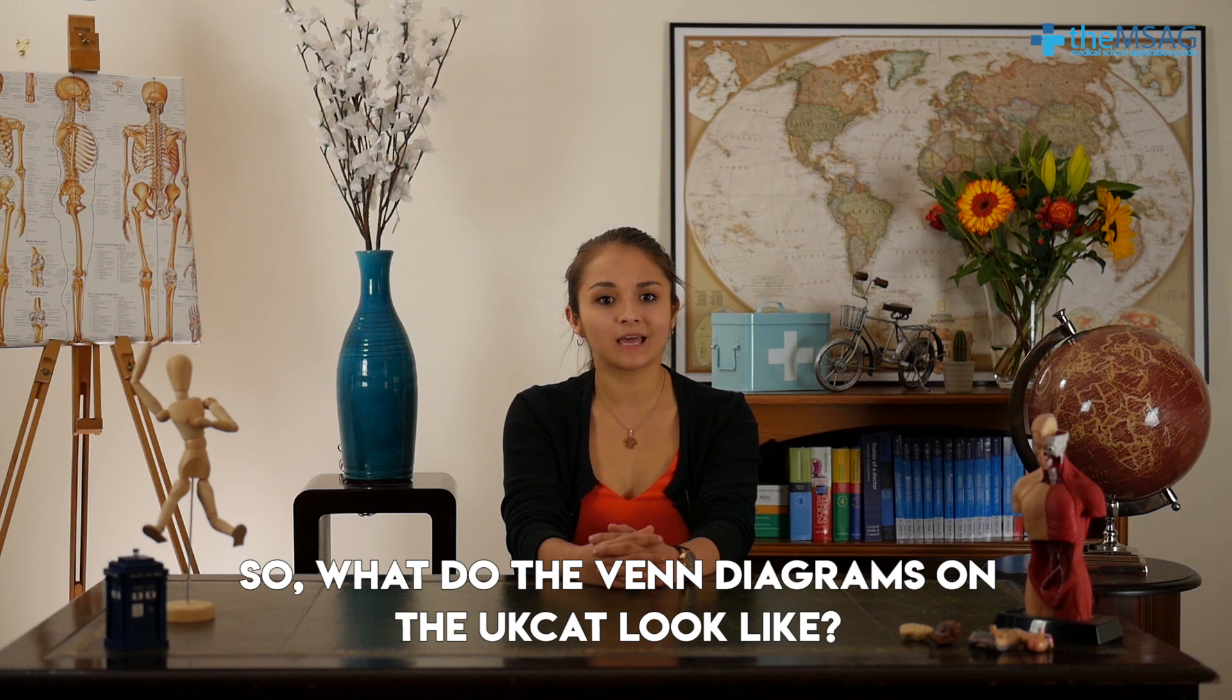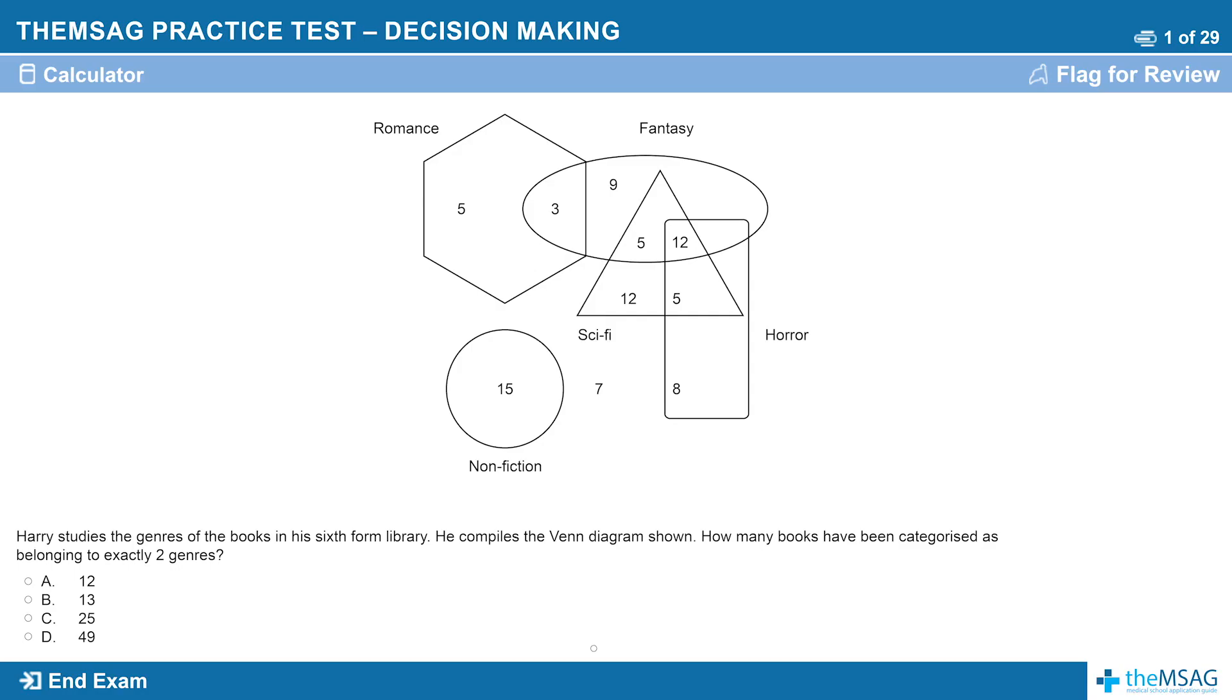So what do the Venn diagrams on the UKCAT look like? Here's a good example. Try to tackle the question that is on the screen now and see how you do. Your target should be about 30 seconds to get the answer.